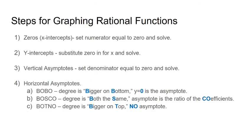And so here's the structure for graphing rational functions, at least how I'm going to show it. We're going to first find our zeros which are x-intercepts, and to do that we're going to set our numerator equal to zero and solve, just like in algebra one.